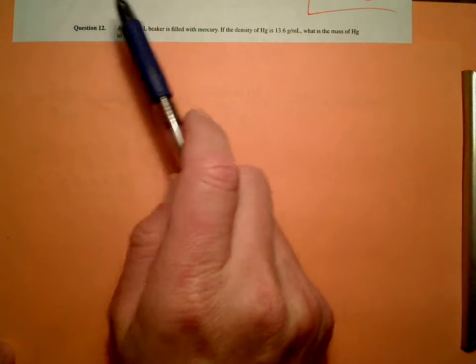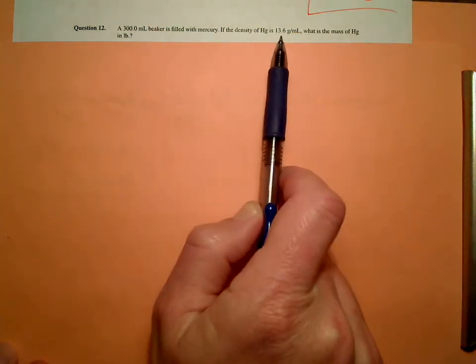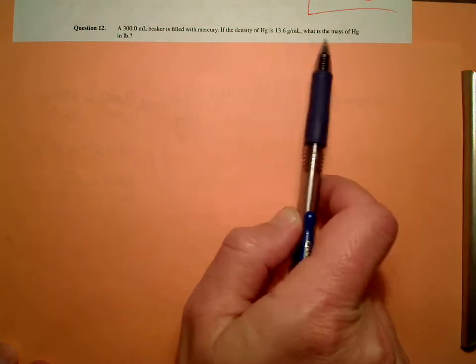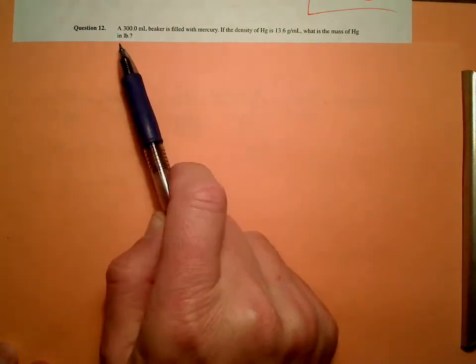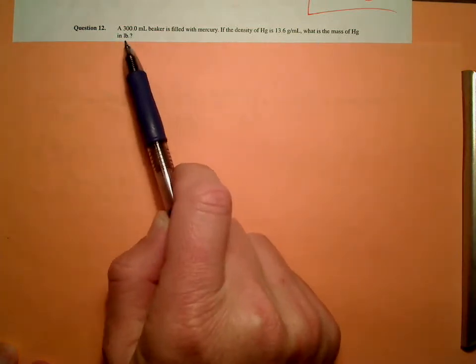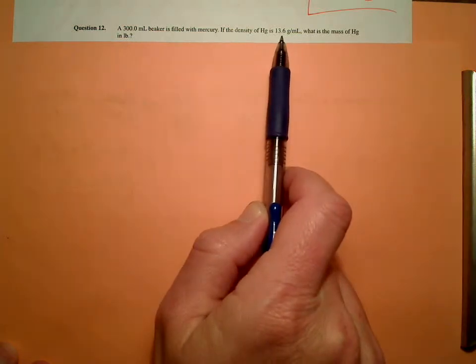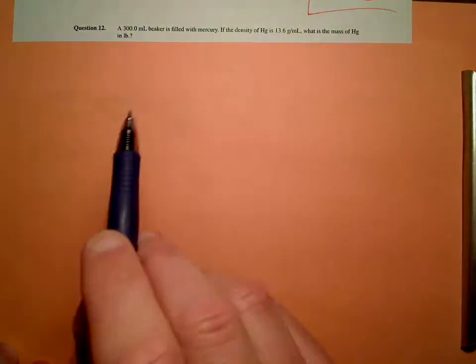Here we have a beaker filled with 300 milliliters of mercury. Mercury has a density of 13.6 grams per milliliter. We want to find out what the mass of mercury is in this beaker in pounds. Now, 13.6 — that's pretty dense compared to water, which is only one.